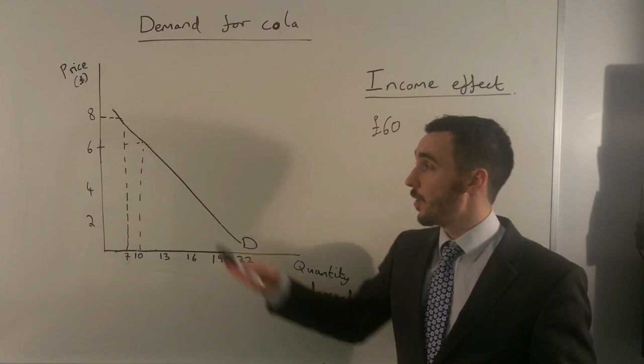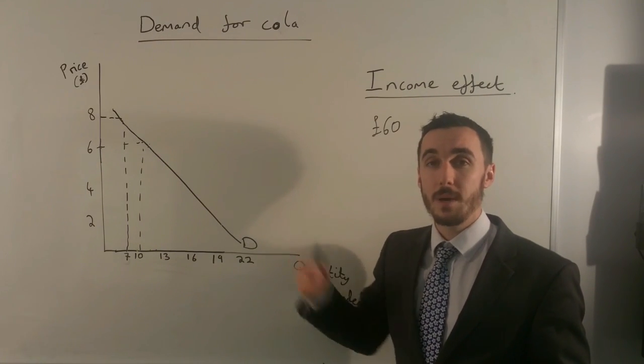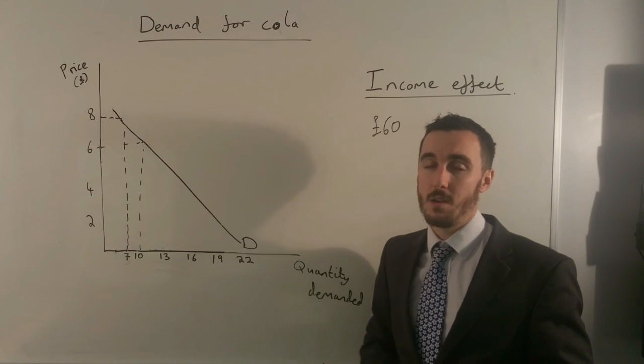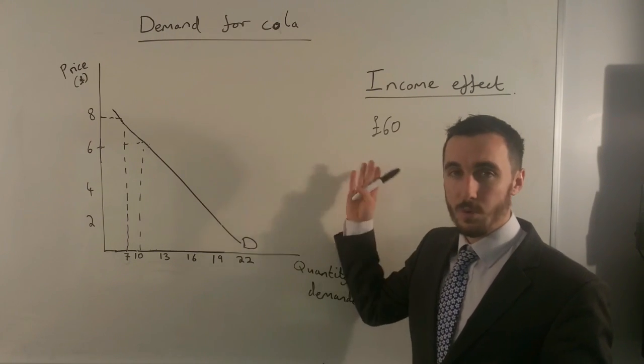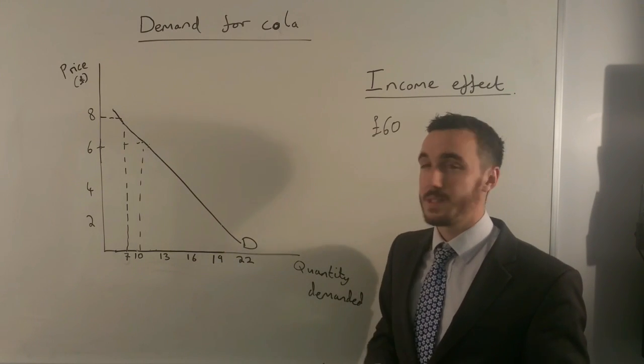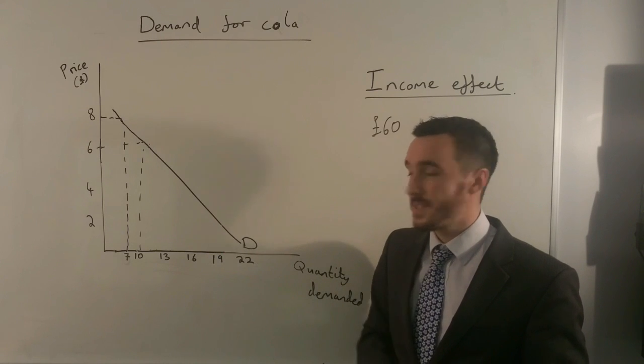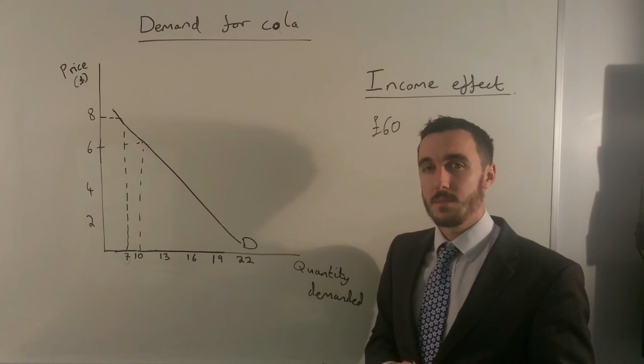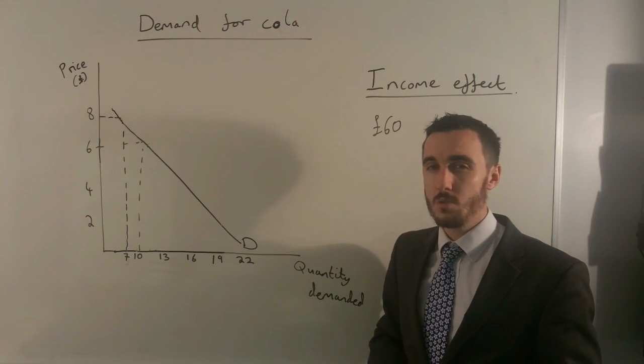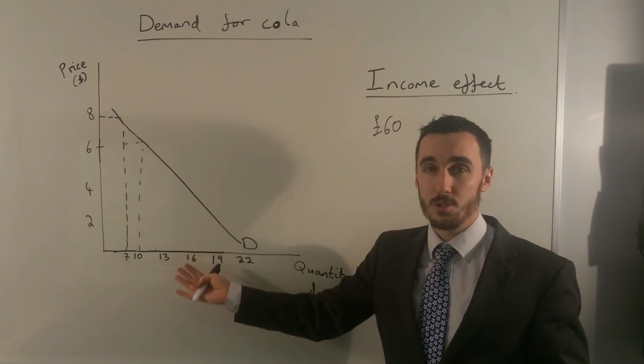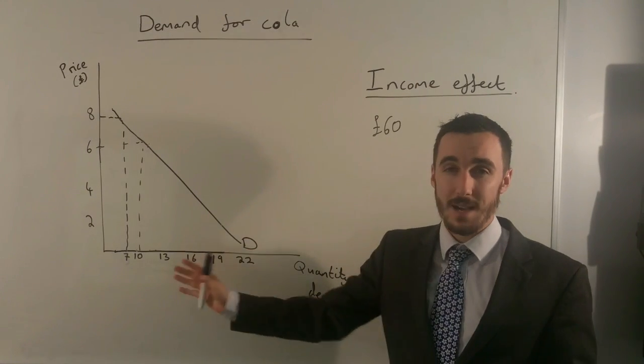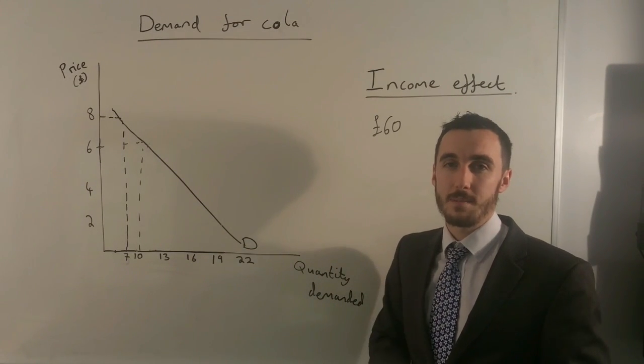As the price goes up from £6 to £8, I'm no longer able to buy the 10 cans of cola I was before because I cannot afford to because I only have £60 of income. Therefore my demand has to reduce to around 7 cans. So this effect on income or the income effect shows why as the price of a good or service goes up, the demand for that good or service has to go down given that we have a fixed amount of income.